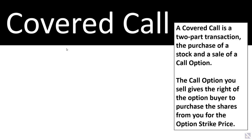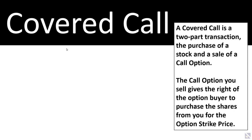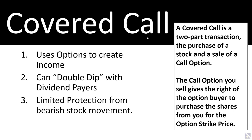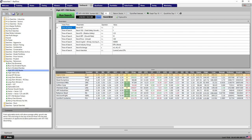Let's talk about the covered call. A covered call is a two-part transaction: the purchase of a stock and the sale of a call option. That call option gives the buyer the right to purchase your shares at the option strike price. Covered calls are a great income opportunity because they use options to create income, you can double-dip with dividend payers collecting income from both, and they provide limited protection from a bearish stock move. Let's look at Cigna in Options Pro.